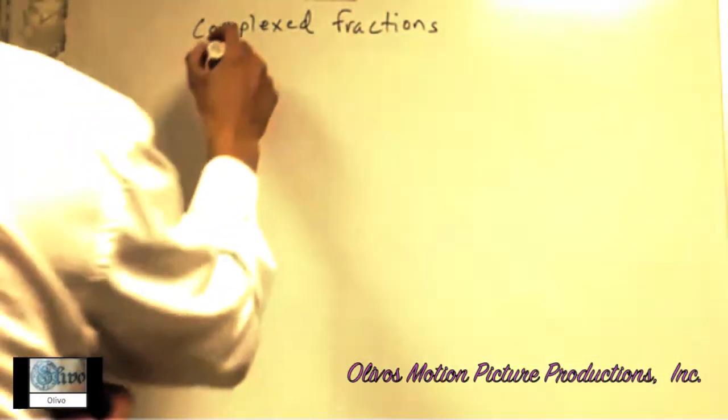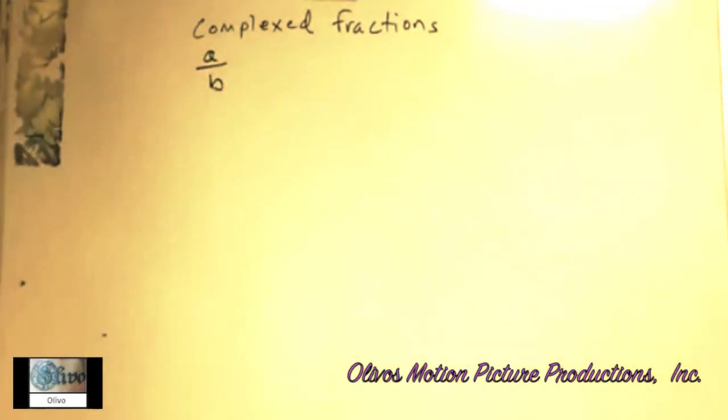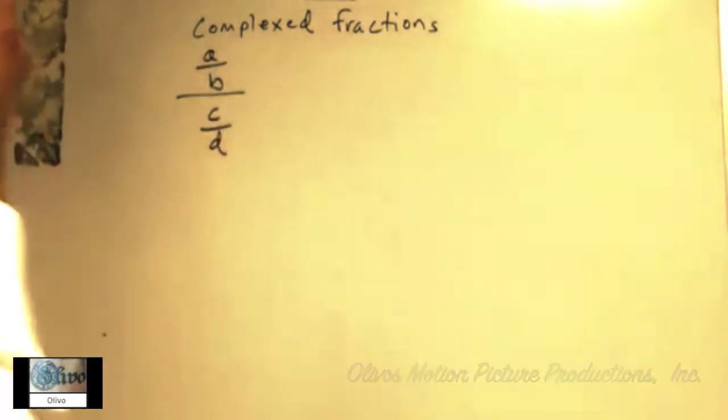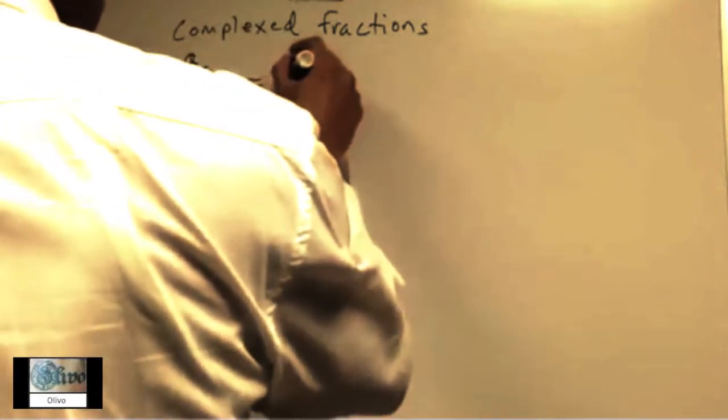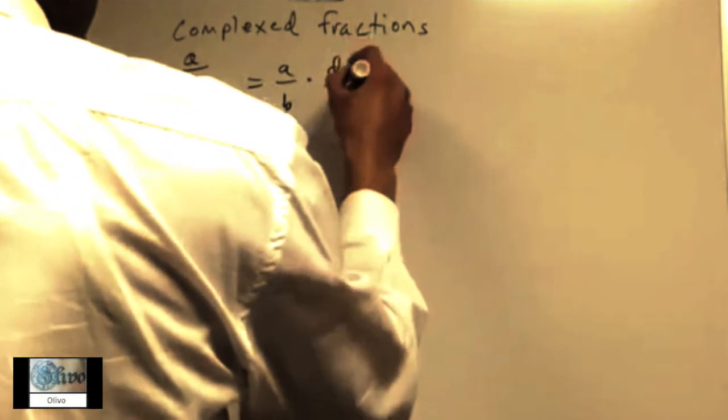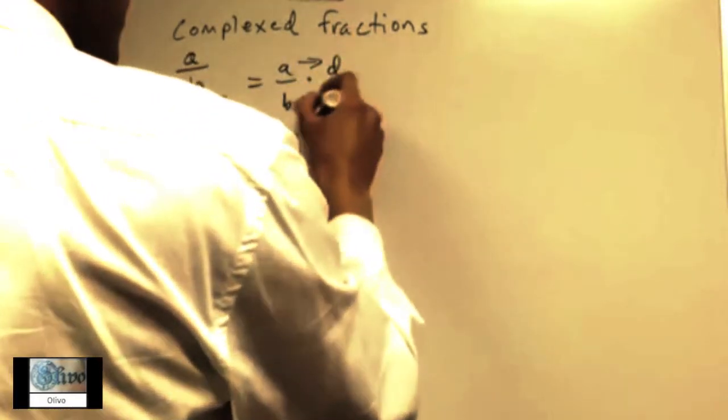You know that in order to divide a fraction, you just multiply by the reciprocal. So you multiply by the reciprocal and there you have it—you multiply straight across.